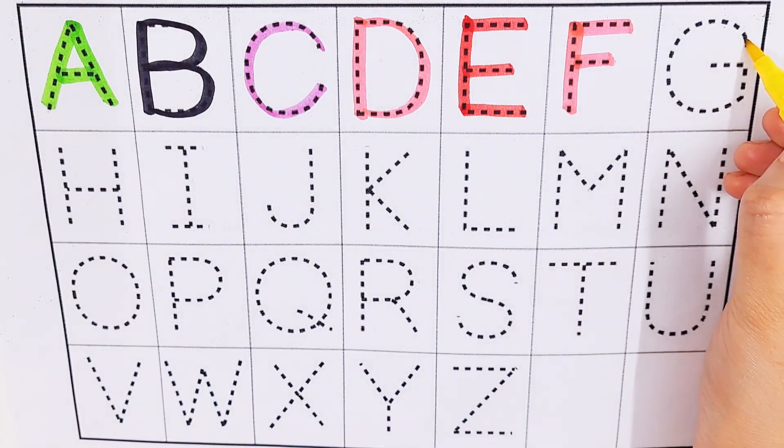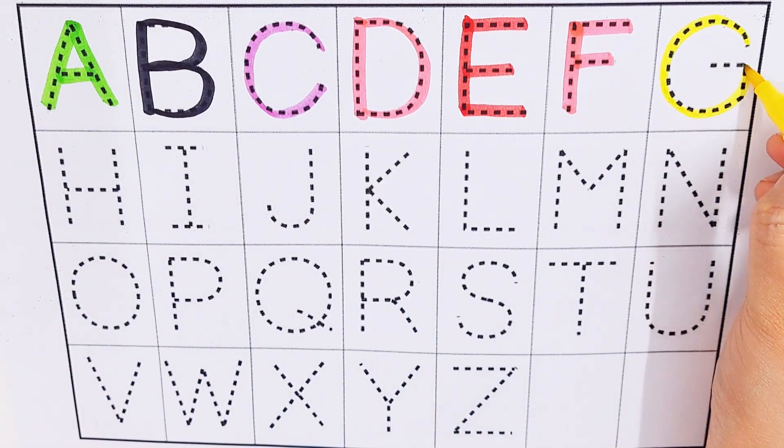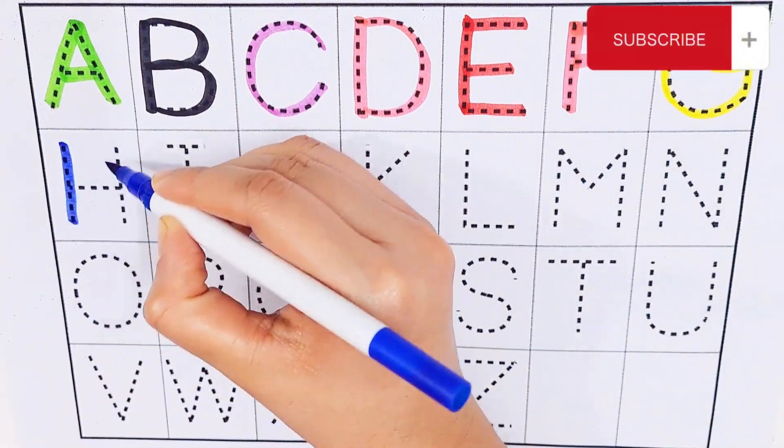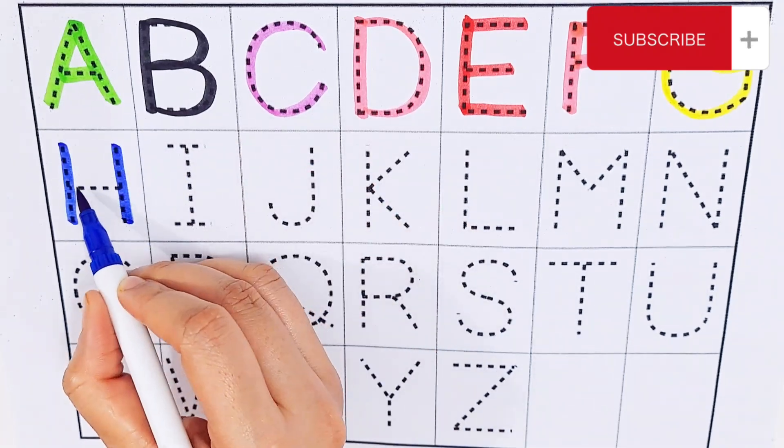Yellow color. G, G for glass. Dark blue color. H, H for house.